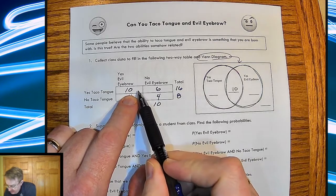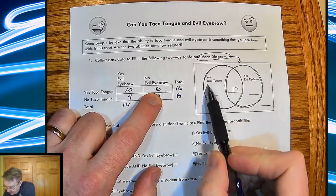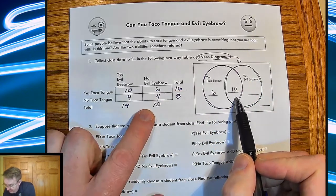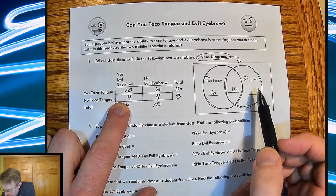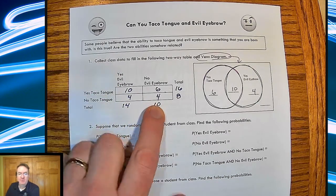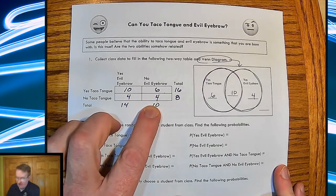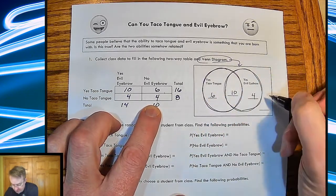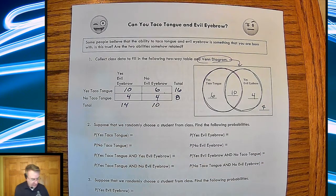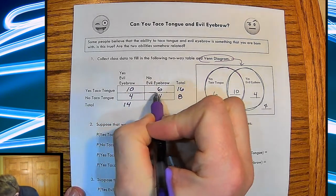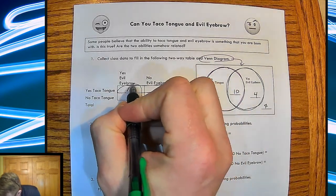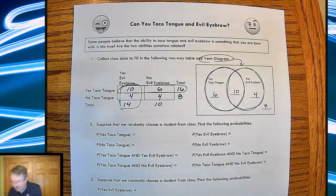Now I have these people can do the taco tongue, but they can't do the evil eyebrow. So there's six. And so there's my 16 total there. So I've got 10 here. I need four who can do the evil eyebrow, but not the taco tongue. And that goes there. So the question is, where does this four go? Those are people who can't do the taco tongue and can't do the evil eyebrow. So that means that they're outside of both of those circles and those are going to be over here. So let's see, taco tongue I did like this and evil eyebrow was like this. So those are kind of how those things all match up.